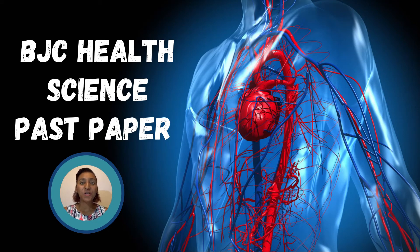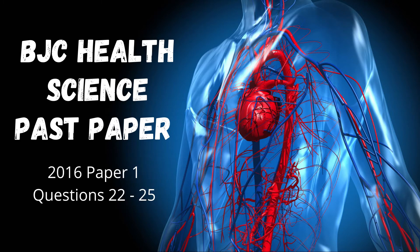Hello everyone, today we're going to take a look at a BJC Health Science Past Paper Answer Key. These questions are taken from the 2016 paper and we're going to answer questions number 22 to 25. These questions involve the blood and the blood vessels so let's get started.